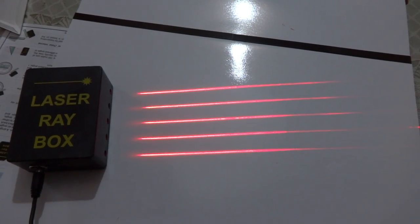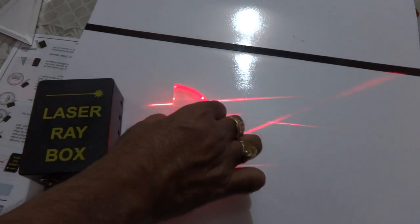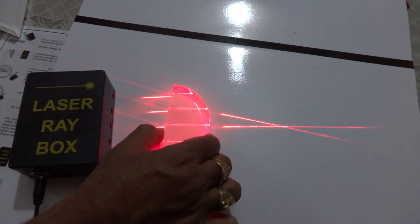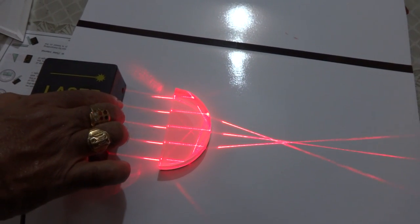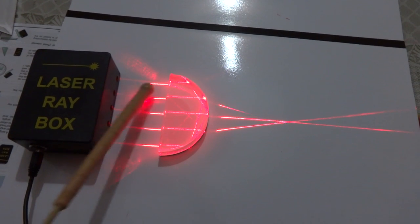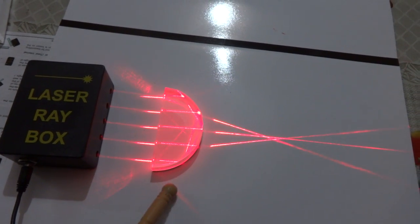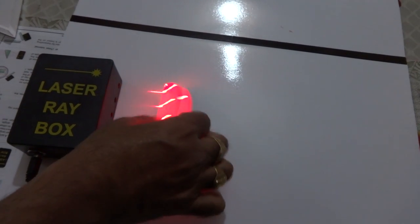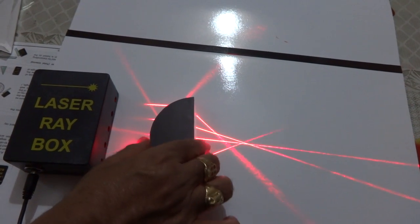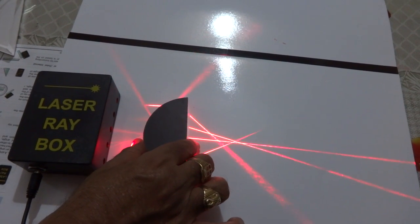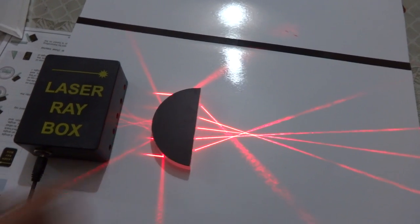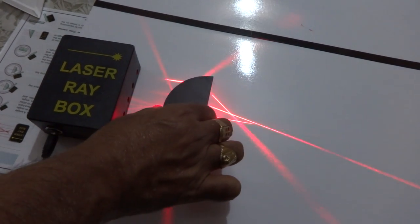Now, let us observe the refraction through plano-convex lens. So, this side is plane and this side is convex side. Now, let us reverse this one. Again, it acts as converging lens.